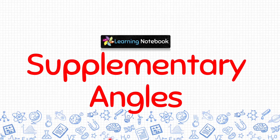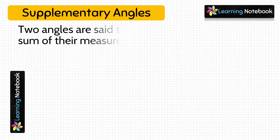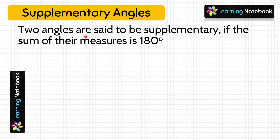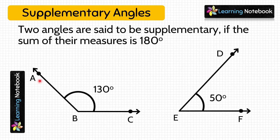Now we will understand what are Supplementary Angles. Two angles are said to be supplementary if the sum of their measures is 180 degrees. For this, let's consider two angles: Angle ABC, which measures 130 degrees, and Angle DEF, which measures 50 degrees.